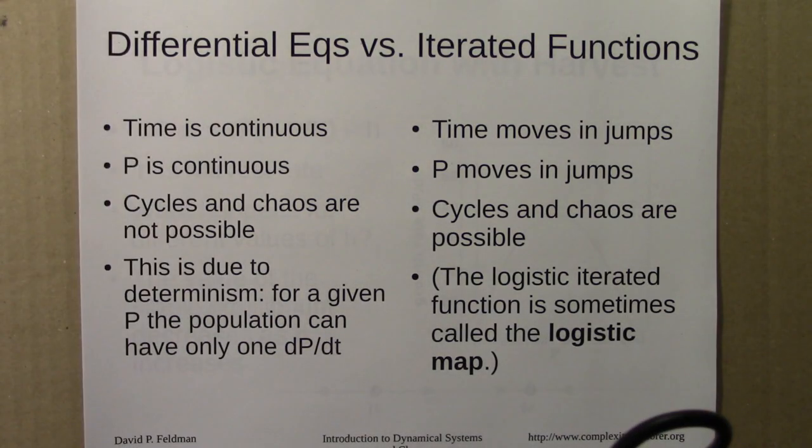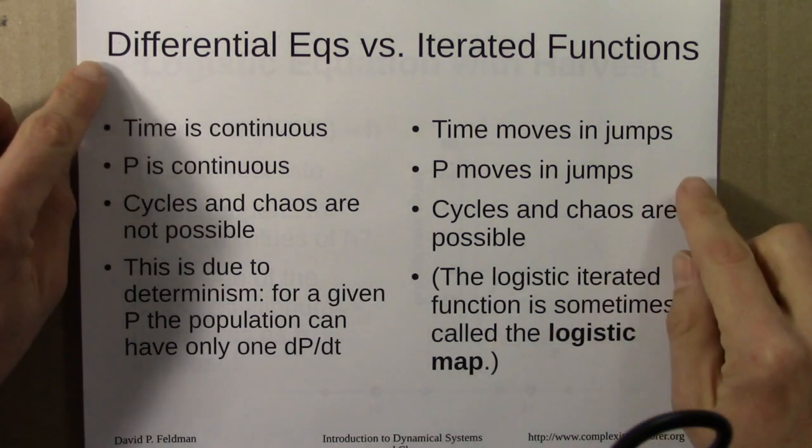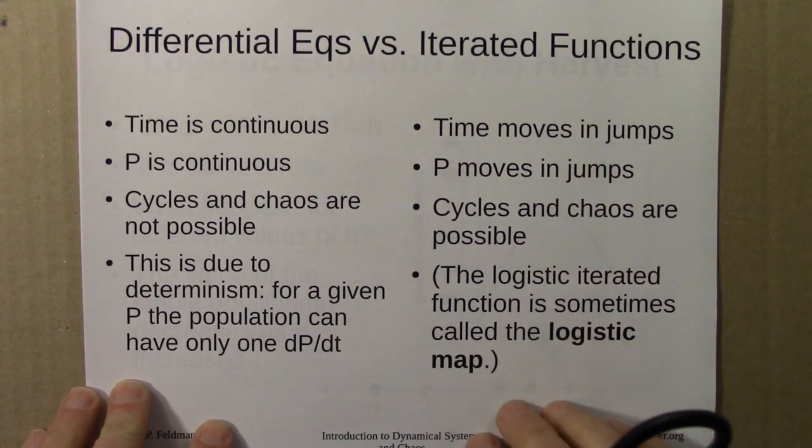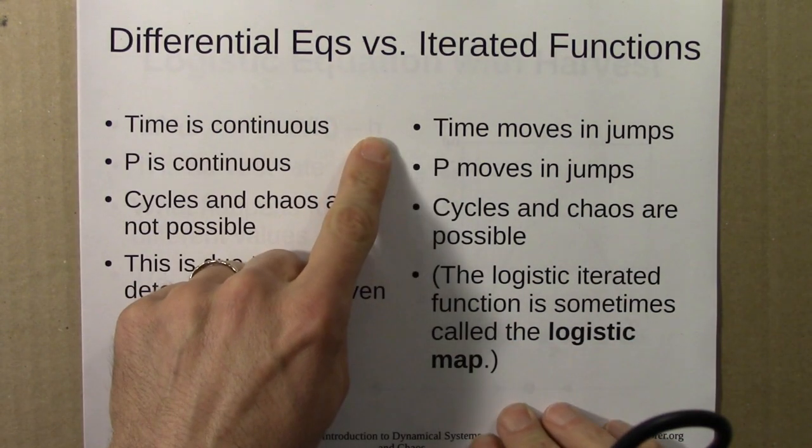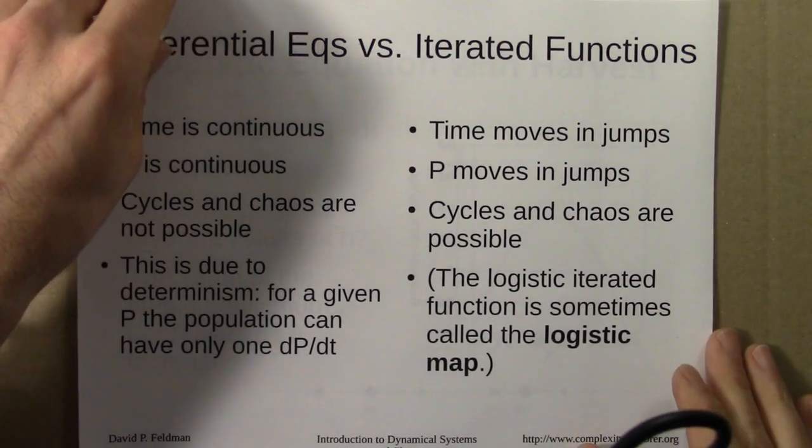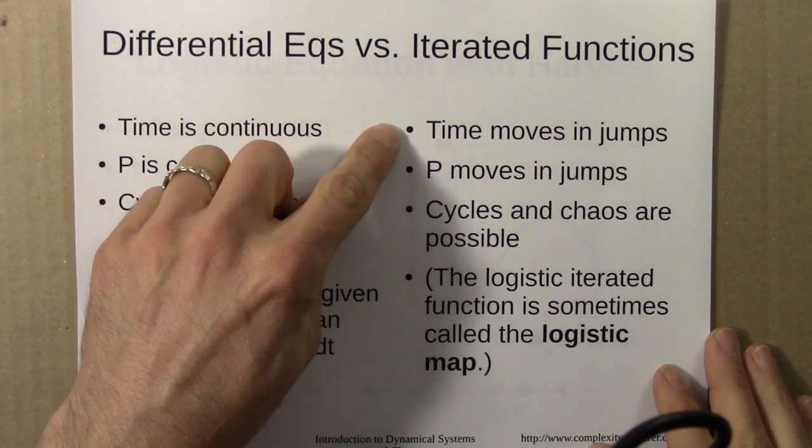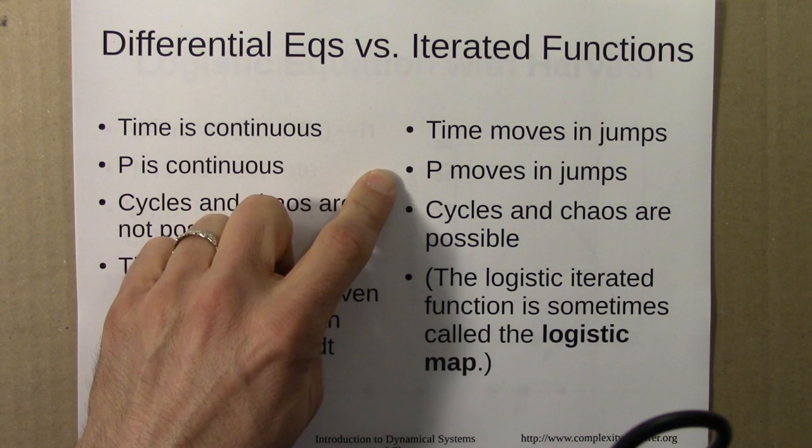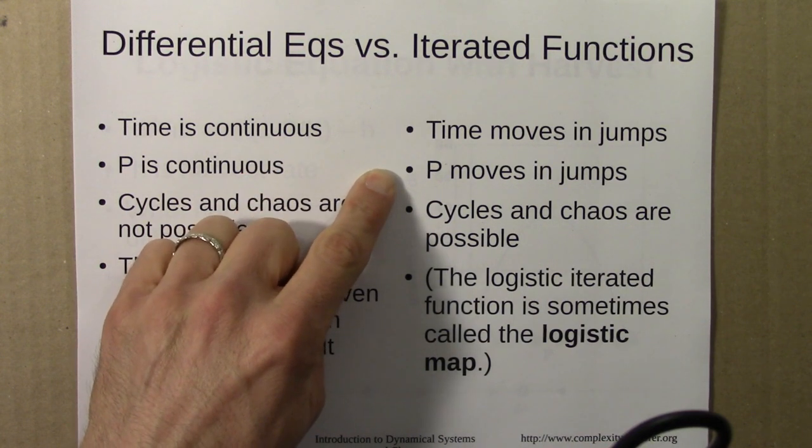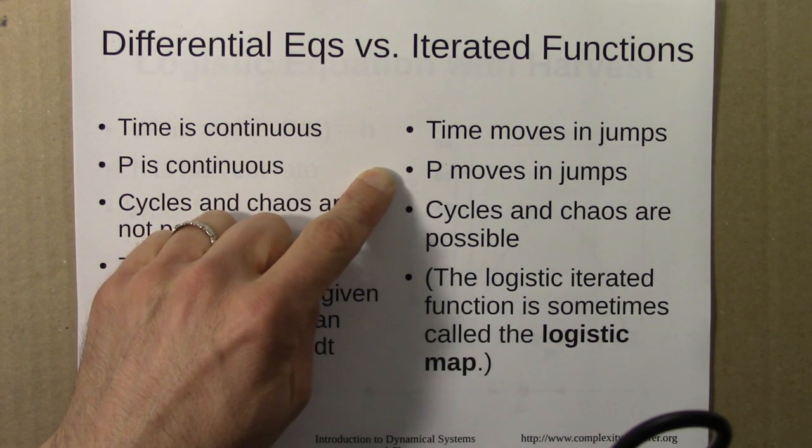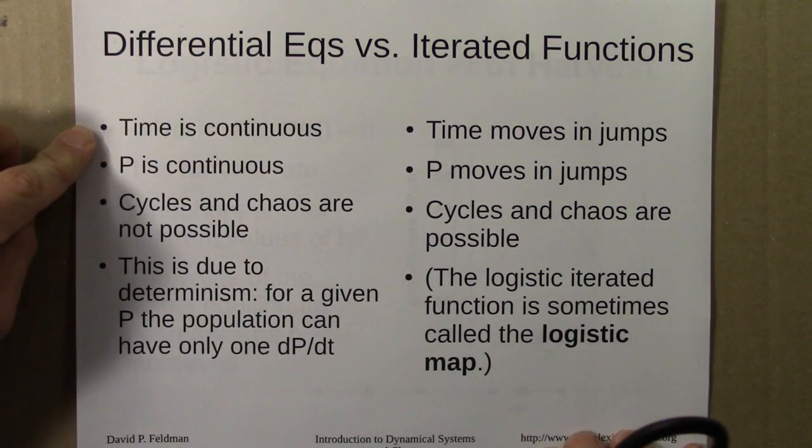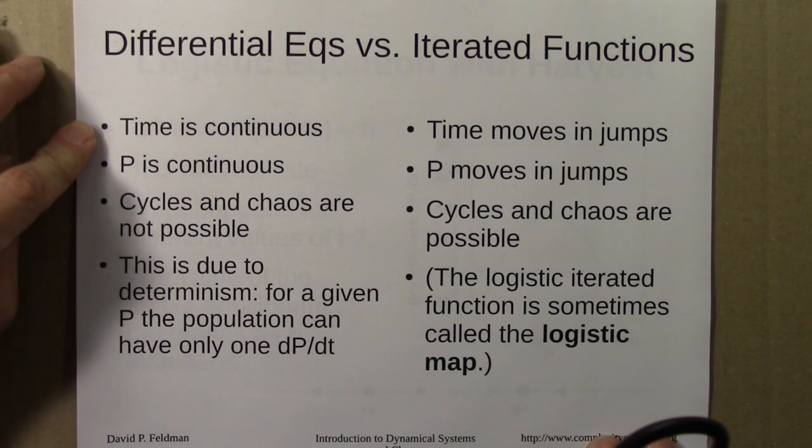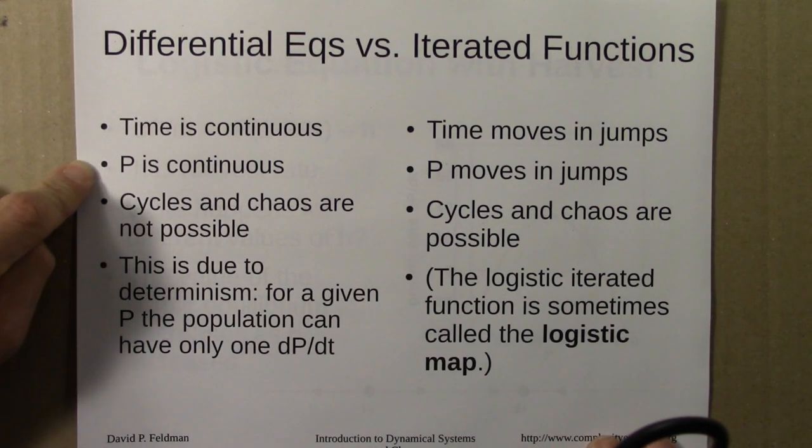Then I compared and contrasted differential equations and iterated functions. For iterated functions, what we worked on in unit 3, time moves in jumps and the population moves in jumps. The population might jump from 0.6 to 0.8 without going through any in-between values. For the differential equations of this unit, time is continuous and P, the population, is continuous.